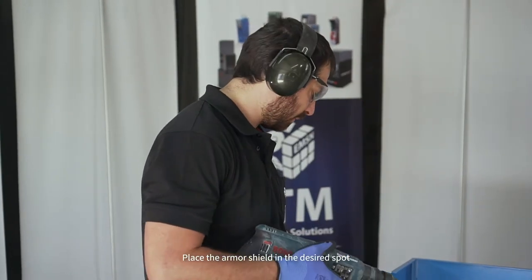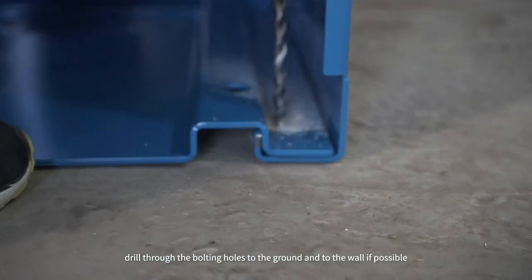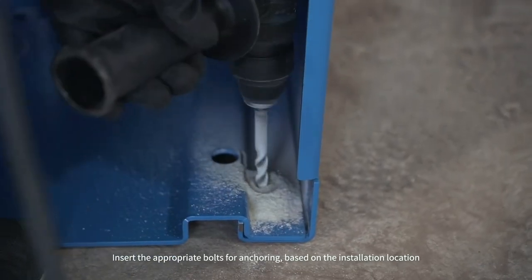Place the armor shield in the desired spot. Drill through the bolting holes to the ground, and to the wall if possible. Insert the appropriate bolts for anchoring, based on the installation location.